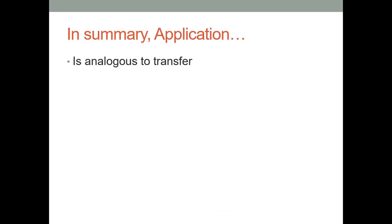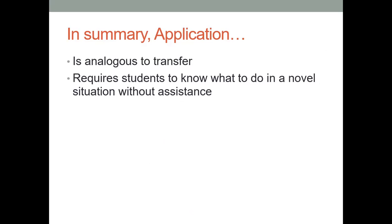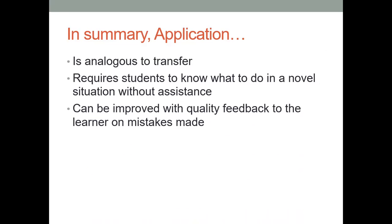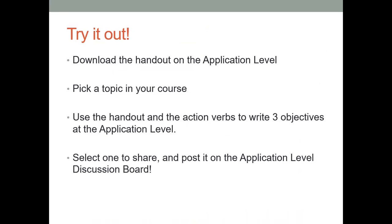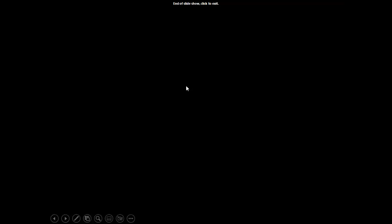In short, application is analogous to transfer. It requires students to know what to do in a new situation without you telling them, and it can be improved with quality feedback on mistakes. Download the application level handout, pick a topic in your course, use the action verbs, and write three objectives at the application level of Bloom's taxonomy. Then select one and post it to the discussion boards so we can all learn from each other. If you have questions, please reach out, and I hope you have a great day.